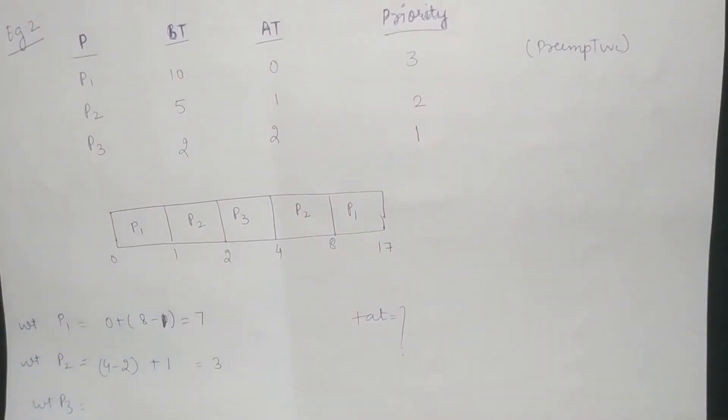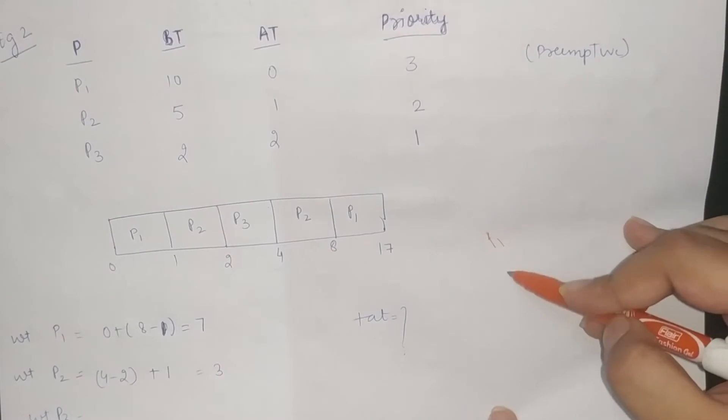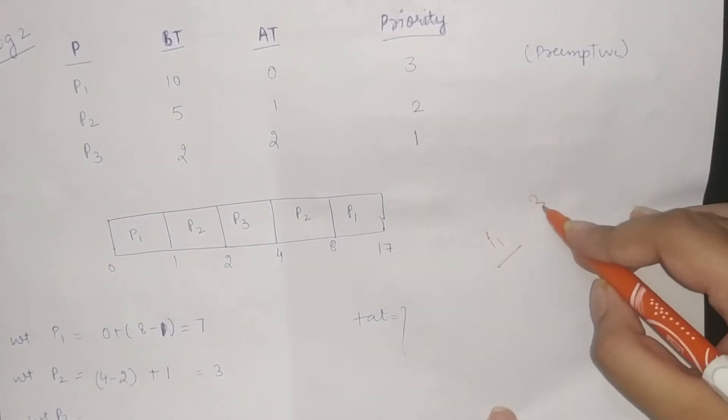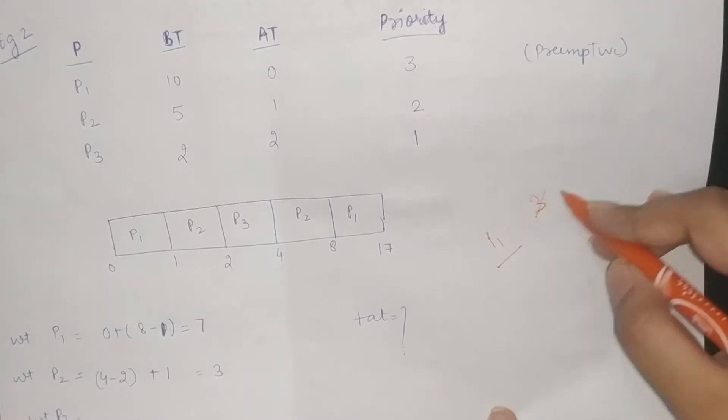Now, we will see the most important type which is the preemptive type. So, the CPU has one process. Suppose the process is P1, it has been executed. Imagine that it was executed in 3 seconds, but it will execute 1 second at a time.